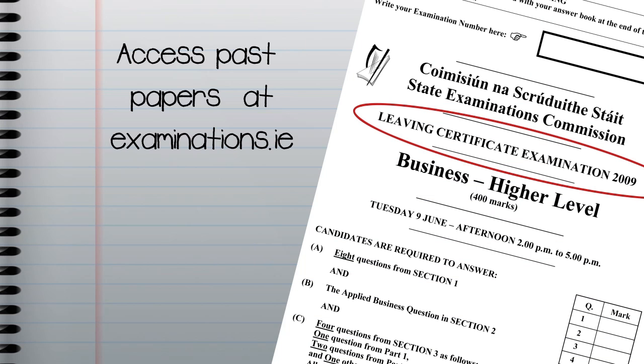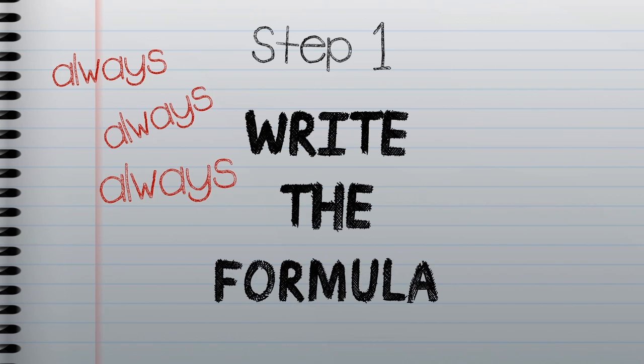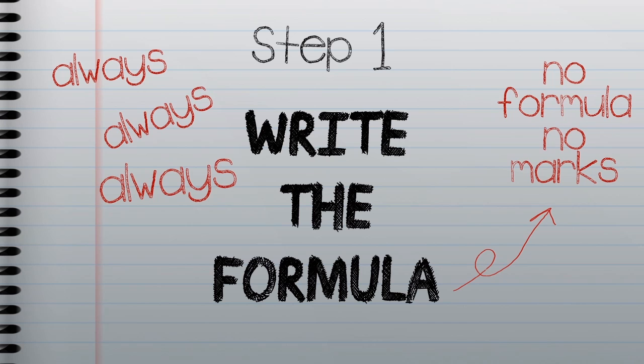We're going to take a look at the 2009 higher level question. This question was marked for 20 marks, and the first step in ratio analysis questions is always to write out the formula very clearly for the examiner. Even if you get the answer correct but didn't show the formula, you would lose marks.